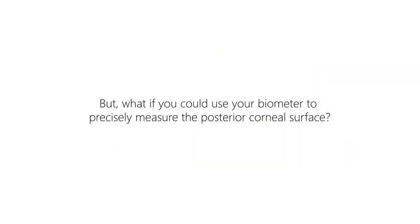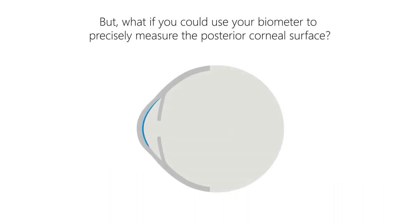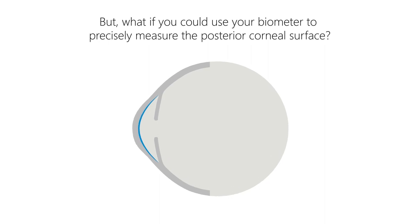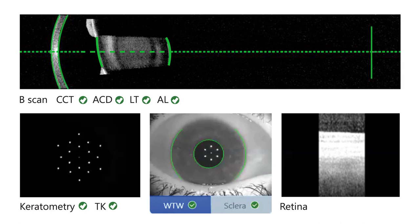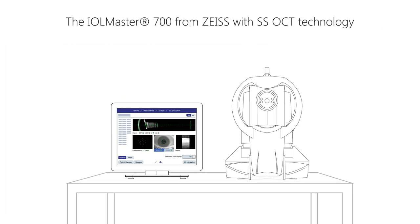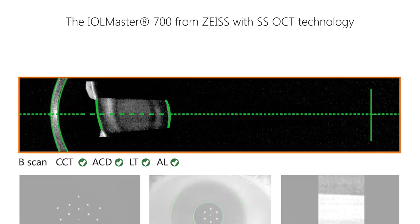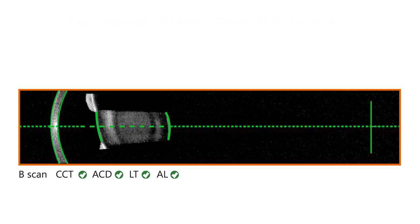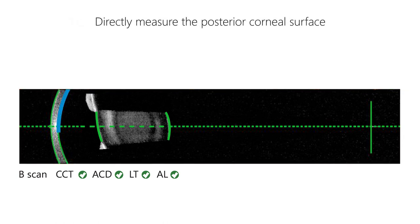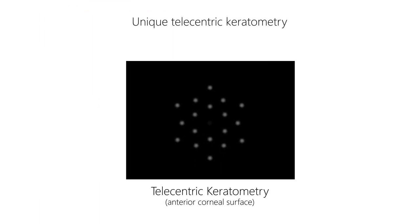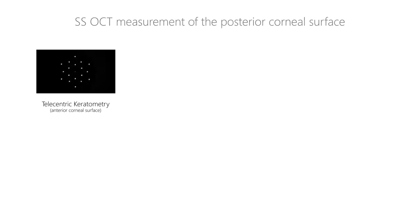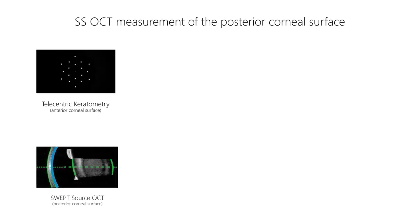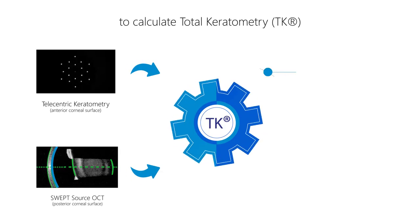But what if you could use your biometer to precisely measure the posterior corneal surface? The IOL Master 700 from ZEISS with Swept Source OCT technology now allows you to directly measure the posterior corneal surface. It combines unique telecentric keratometry measurement of the anterior corneal surface with measurement of the posterior corneal surface in order to calculate total keratometry.